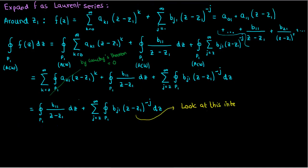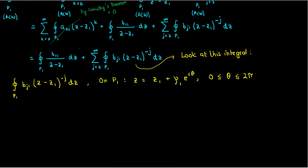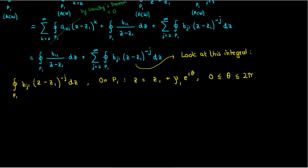So now we're left with the integrals over just the principal part of the Laurent series. If we look at this last integral, the one which I have b sub j1 starting from the index of 2, then what I can do is that because p1 is just a circle, say of radius ρ1, I can write my complex variable z as z1 plus ρ1 e to the iθ, which is just a polar representation of a circle in the complex plane.